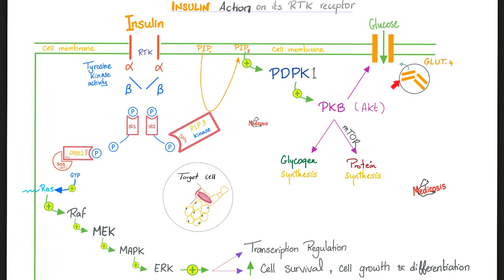When protein kinase B is active, it lets glucose in. First, I had to synthesize the GLUT4 transporter, which was in the vesicle; I get it out, and now the door is open for glucose to come in. What will you do with this glucose? I can use it or I can make glycogen from it — glycogen synthesis.